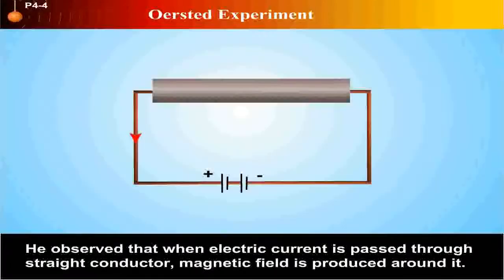He observed that when electric current is passed through straight conductor, magnetic field is produced around it.